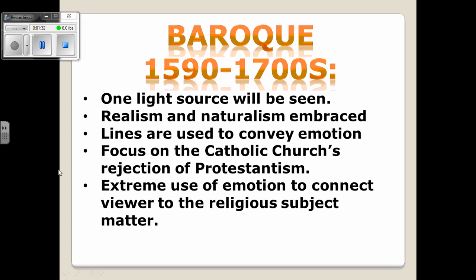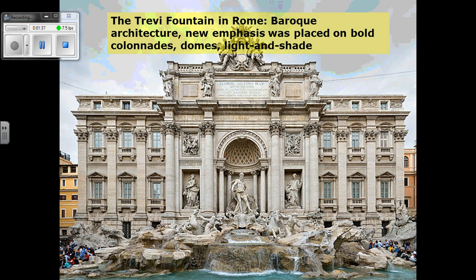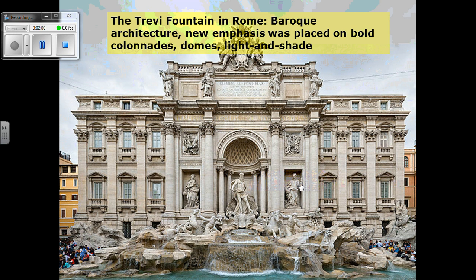Our first piece of Baroque architecture is the Trevi Fountain. Some of you may have seen this in movies — the Trevi Fountain in Rome is very clearly defined as Baroque. New emphasis was placed on bold colonnades and domes created with light and shading. The building is symmetrical — three windows on each side with outcroppings, domed windows at the top, and triangular pediments below.